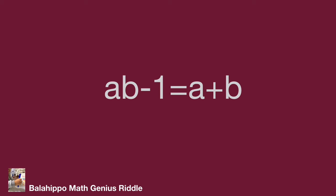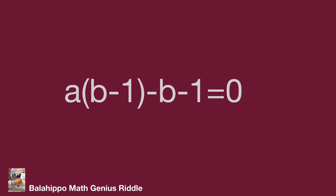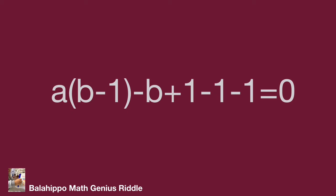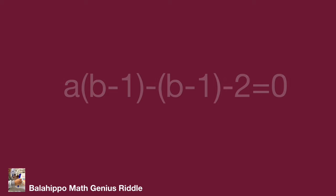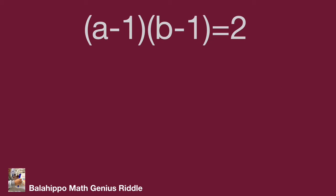Move all items to one side: ab - a - b + 1 = 0. Factorize ab - a as a(b-1), then generate the (b-1) factor throughout. Adding and adjusting terms, we simplify to a(b-1) - (b-1) - 2 = 0. Factorizing the first and second quantities and moving -2 to the right side gives (a-1)(b-1) = 2.